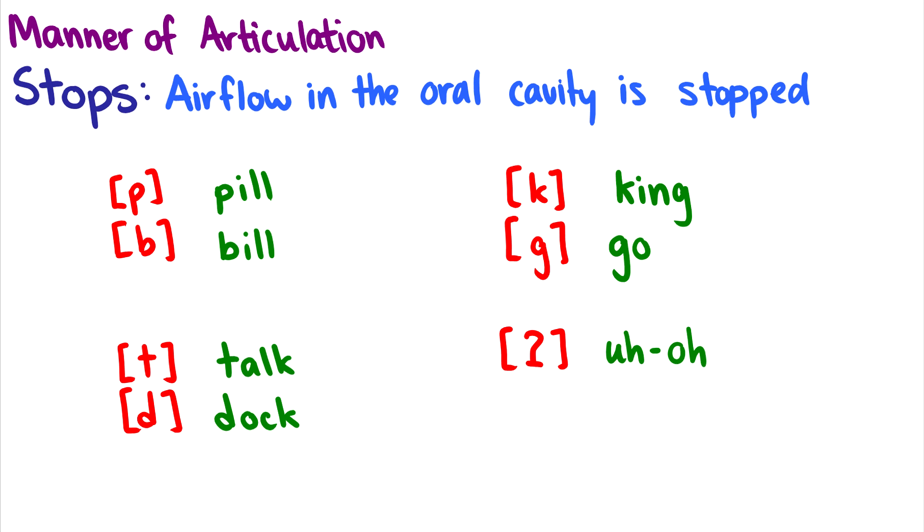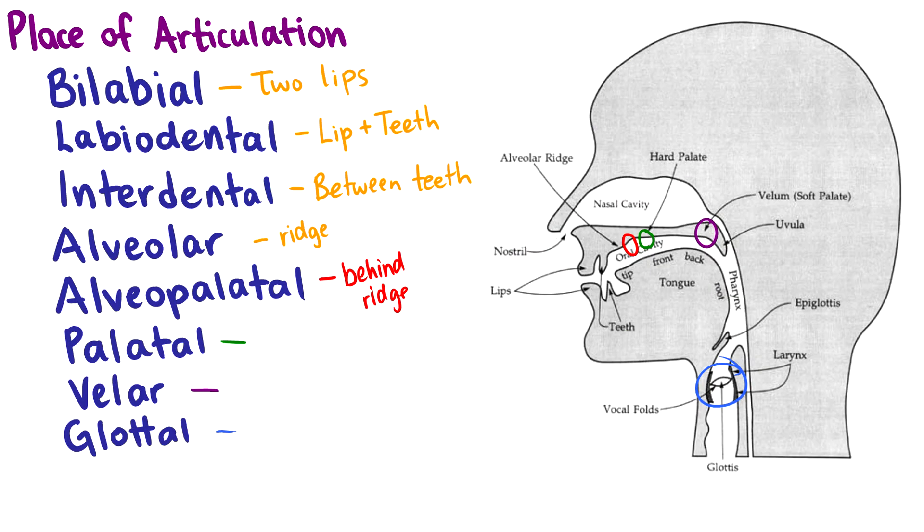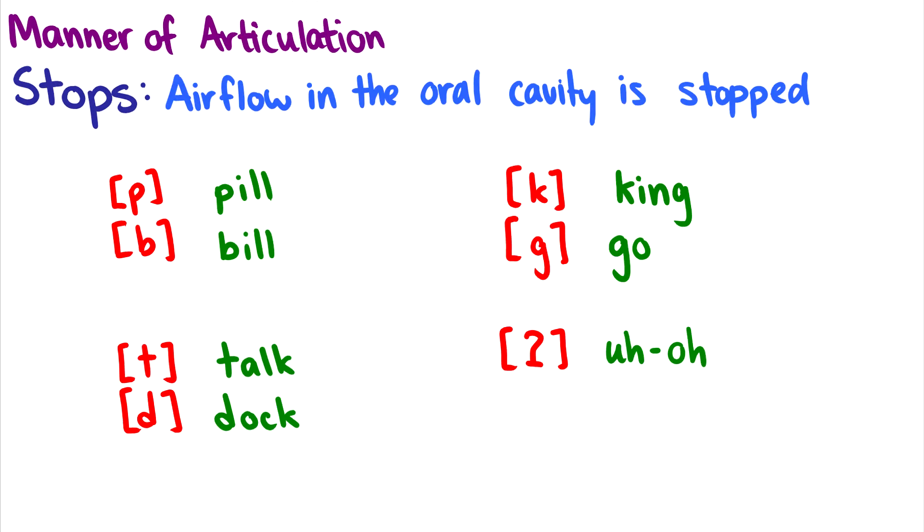So for instance, with stops, airflow in the oral cavity is stopped. And just to take a look at this, the oral cavity, this means somewhere when air is trying to escape out of your mouth, it is held at some point, and then it can escape. So for instance, puh and buh as in pill and bill. Okay, these are bilabial sounds. So here the airflow is stopped right behind your two front lips, puh and buh, and then it's released. And that makes the puh and buh sound.